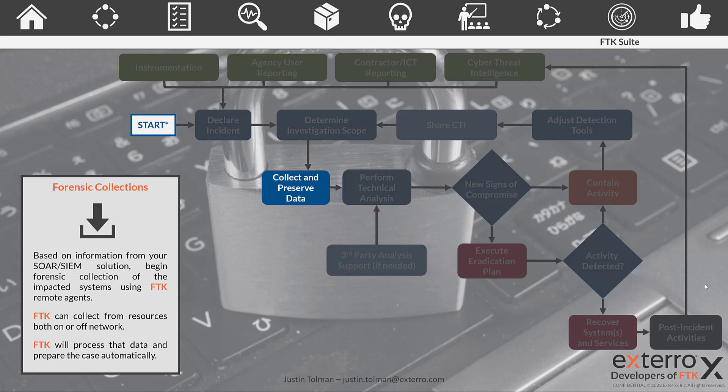We want to start to collect and preserve the data, and that's what FTK does really well. Using the FTK agent, we can collect information from endpoints whether they're on or off the network, and you can choose what type of information to collect based on the report from your source SIEM solution. That can be pre-programmed so that it reacts accordingly and automatically. The FTK agent can collect from Linux, Mac, and Windows machines on or off your network. Being automated and tied to your SOAR and SIEM solution means this happens very quickly right at the beginning, so you're getting the most fresh and relevant data collected and preserved into a forensic format.